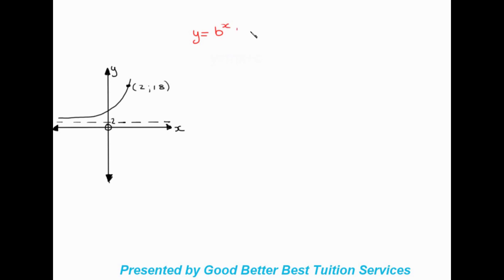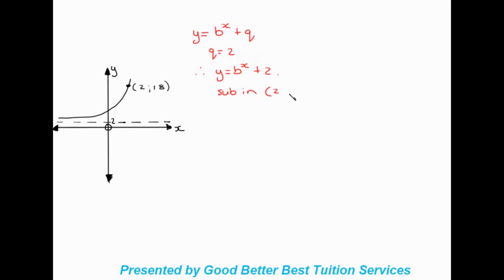Now let's move on to something a bit different. In this example we do have an asymptote, and we are still using the formula y equals b to the power of x plus q. We can see that q equals 2, so the equation looks like y equals b to the power of x plus 2. Our only unknown is now b, and we substitute in x equals 2 and y equals 18.